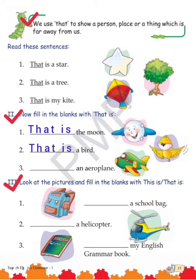Exercise three: look at the pictures and fill in the blanks with 'this is' or 'that is'. Hume dhyan se picture dekhni hai and we have to see whether it is near to us or far from us, and then decide — 'this is' likhna hai ki 'that is' likhna hai.